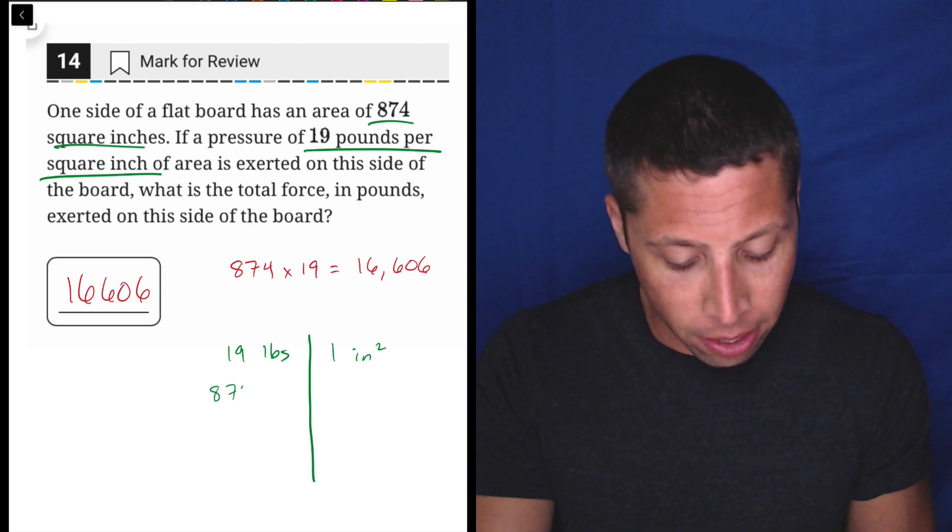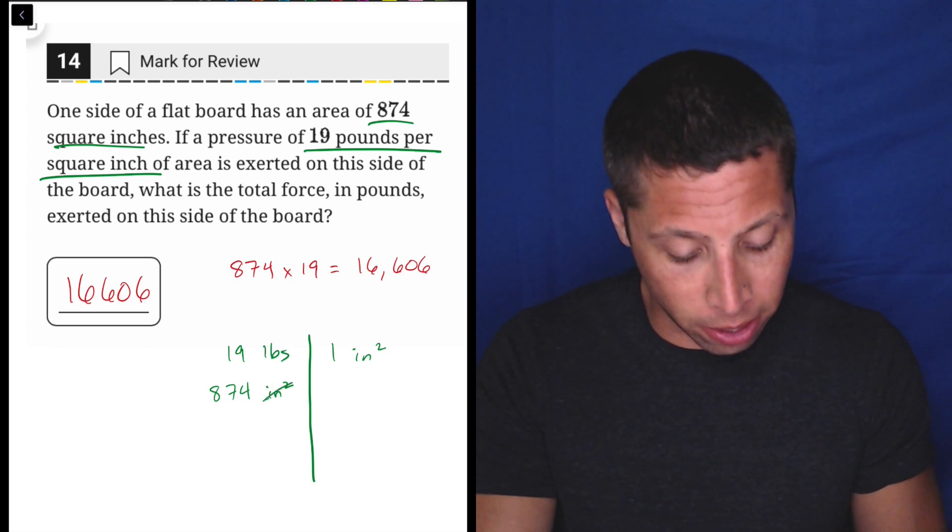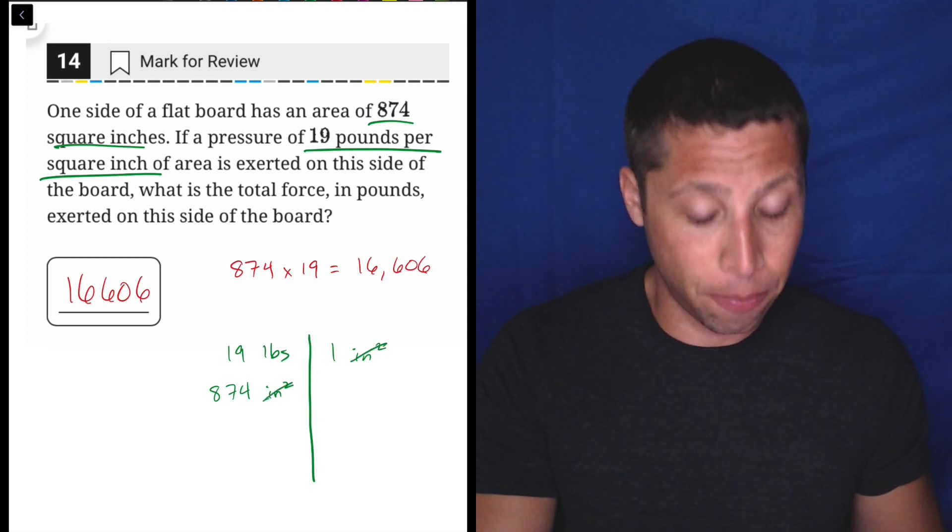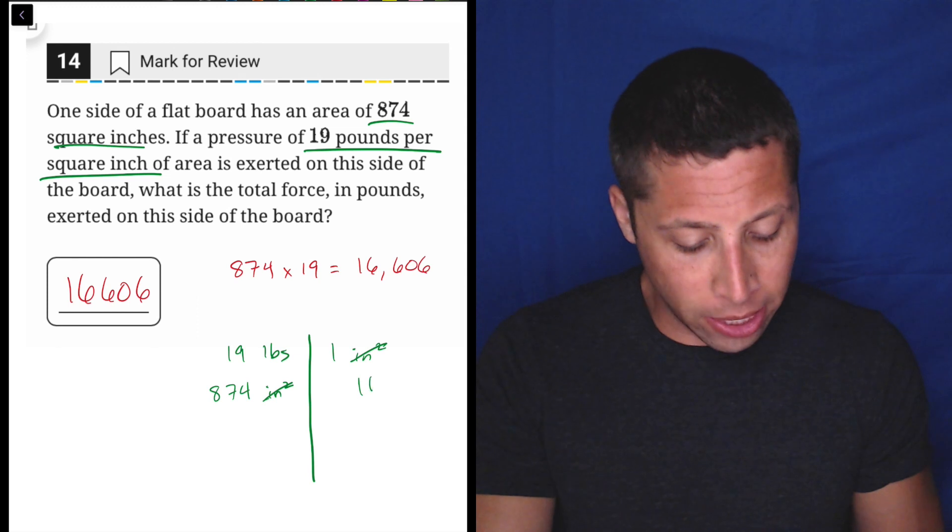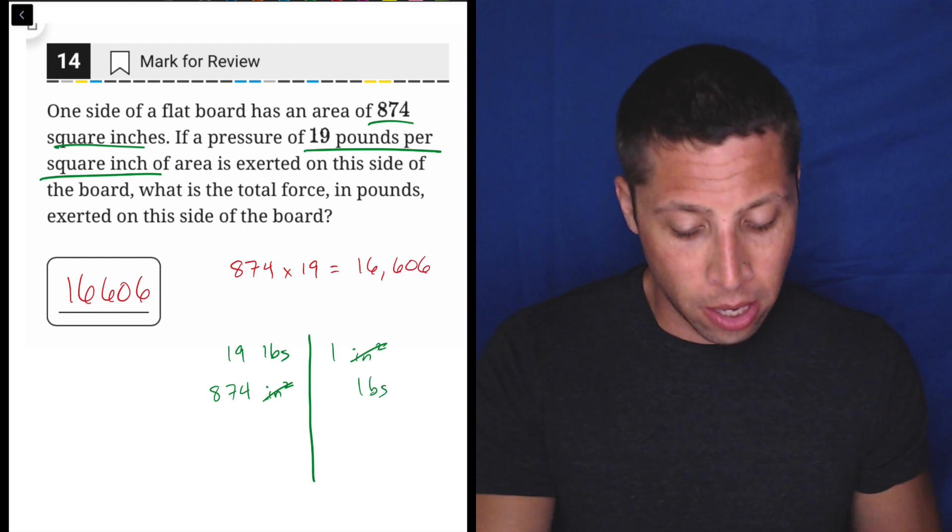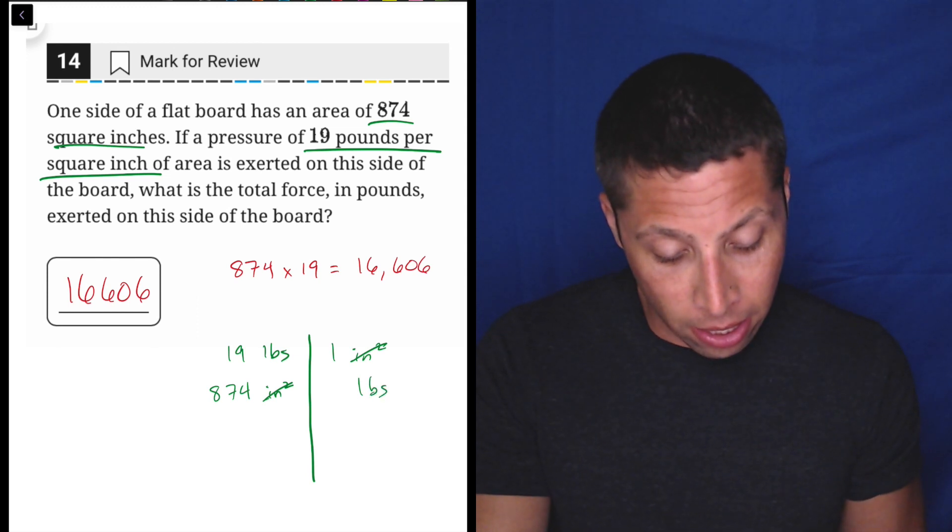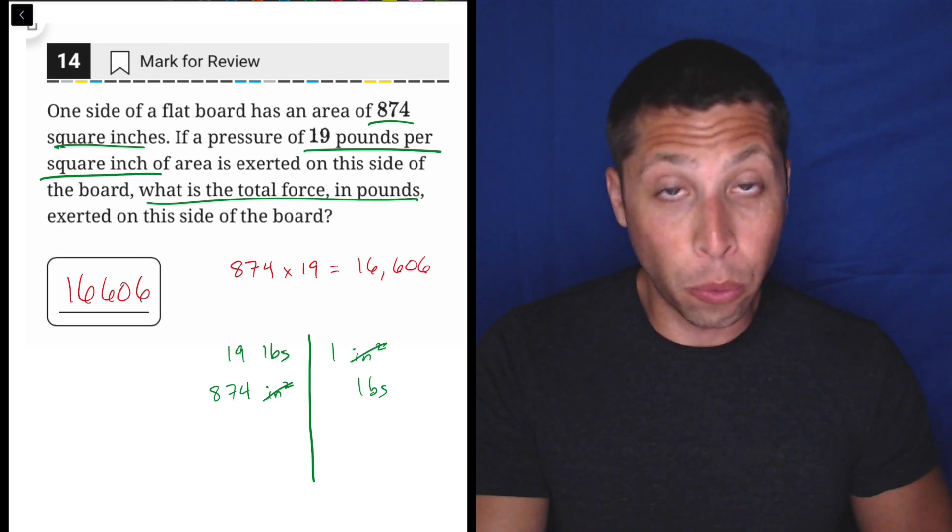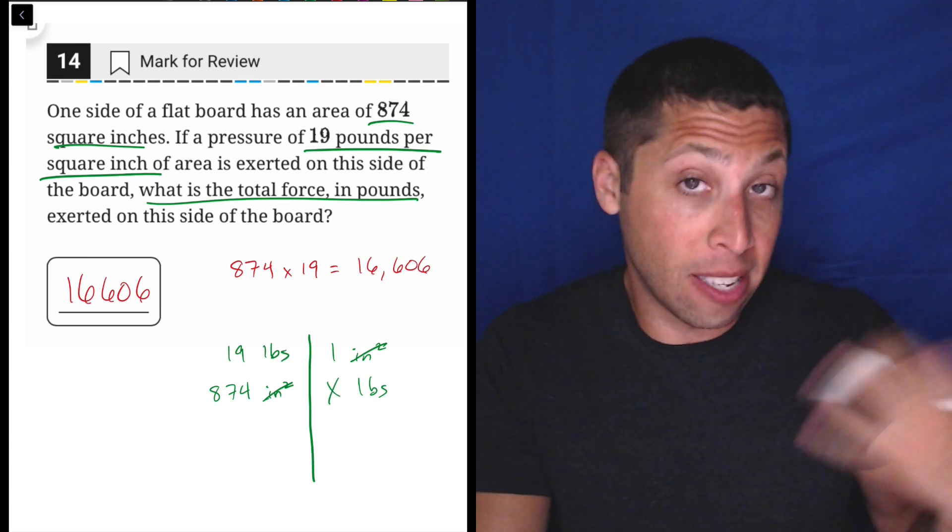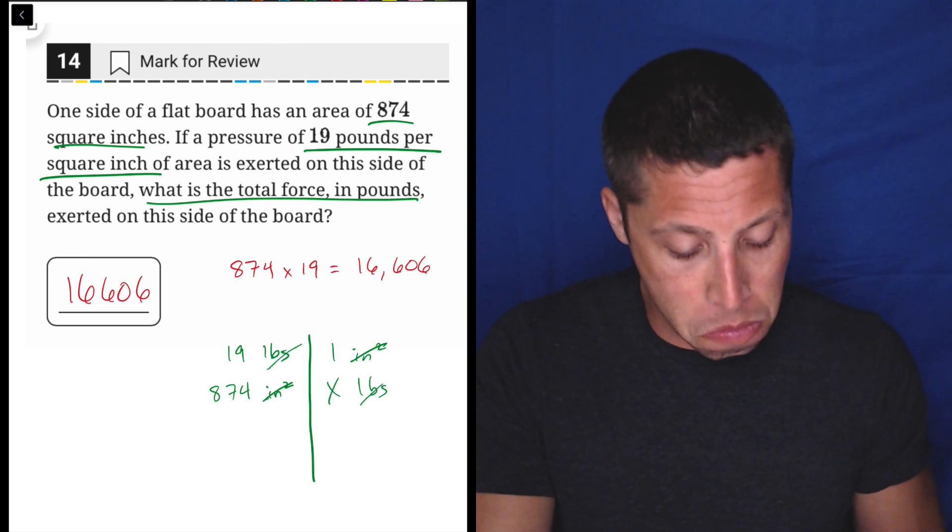So 874 square inches, I'm going to put that on this side because if I have inches squared here and here, they cross out. So now what do I need? Well, I need pounds. And look at what the question is asking, right? What is the total force in pounds, right? So my X is my pounds.